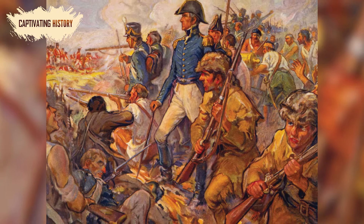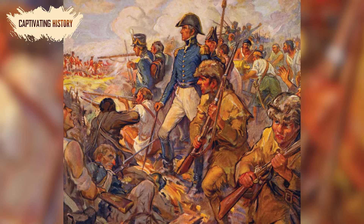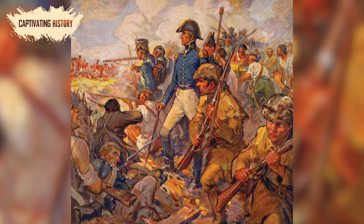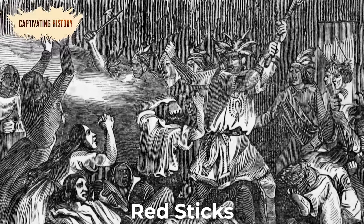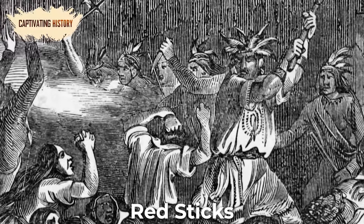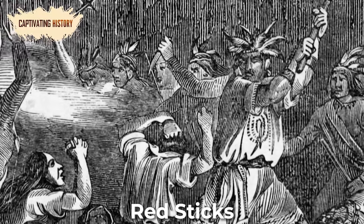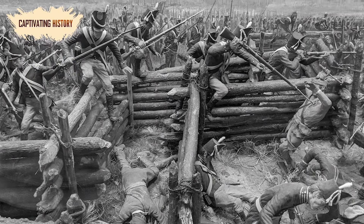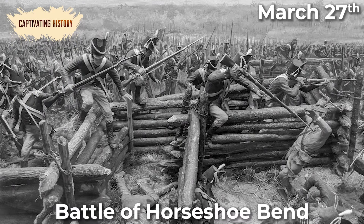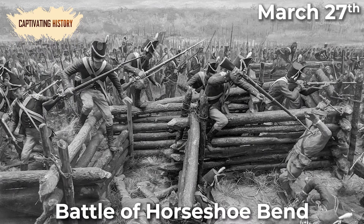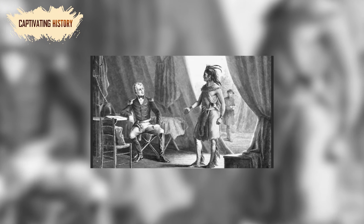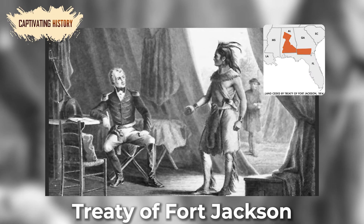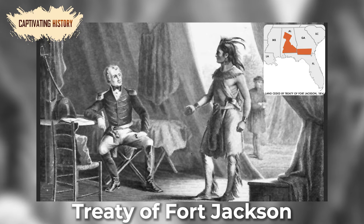1814 began with an American victory in Alabama, where some Native Americans had joined forces with the British. Red Sticks, a group of Native Americans opposing American expansion, had attacked the lower creek towns. Andrew Jackson and his allies won the day on March 27 in the Battle of Horseshoe Bend. He then forced the allied Native tribes to sign the Treaty of Fort Jackson and cede nearly 23 million acres of land.